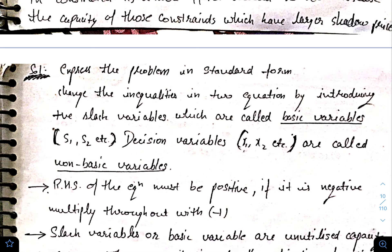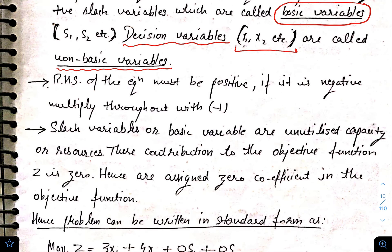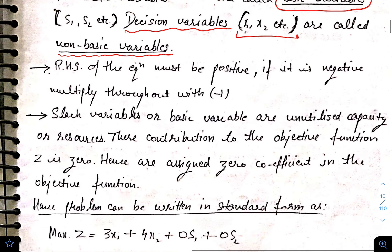Slack variables are also called basic variables — this is very important. They are called basic variables because they give us the initial basic feasible solution. x1 and x2 are called decision variables or non-basic variables. Also, keep in mind that the right-hand side of every equation must be positive. If you have a negative value on the right-hand side, multiply the whole equation by minus one before applying the simplex method.